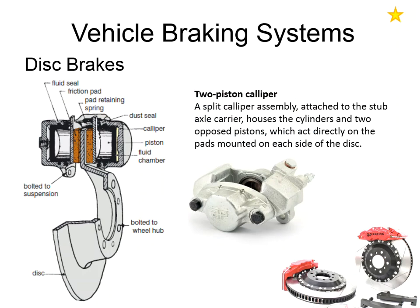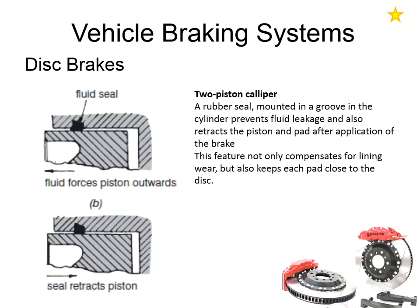Now we're going to have a look at the three main types of brake caliper and a little bit on the construction of each. The first is the two-piston caliper, where you have two pistons — one for each brake pad — operating on each side of the disc. Each piston pushes a brake pad towards the disc giving us our clamping action. One of the important constructional features of the brake caliper is the use of a square-cut fluid seal.